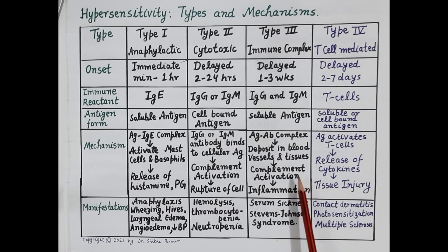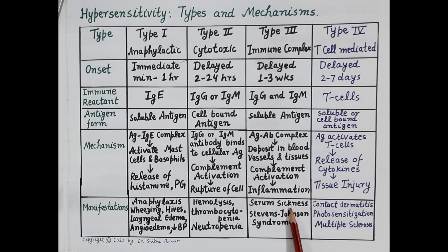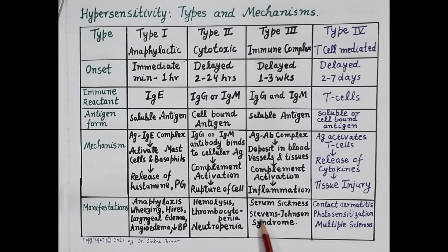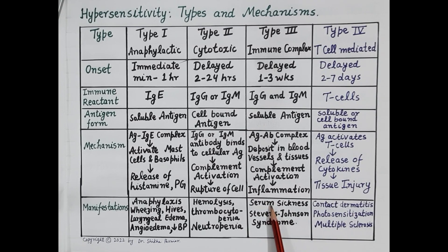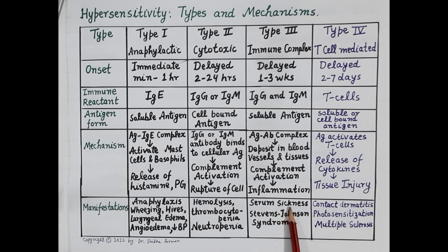The antigen-antibody complex gets deposited in blood vessels and tissues, causing complement activation. Complement activation results in inflammation and allergic reactions. Manifestations of Type 3 allergic reactions include serum sickness and Stevens-Johnson syndrome. Infliximab, a monoclonal antibody immunosuppressant used in treatment of autoimmune disease, can cause serum sickness in hypersensitive individuals. Serum sickness is characterized by fever, joint pain, and lymphadenopathy — that is enlargement of lymph nodes.